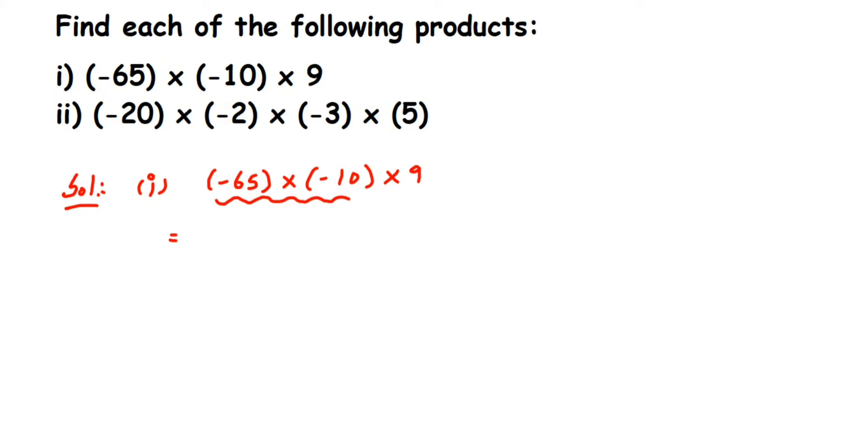So 65 multiplied by 10 is 650. Now remember, when multiplying two negative numbers, whenever you multiply negative numbers an even number of times, the answer will always be positive.